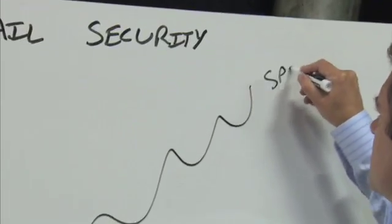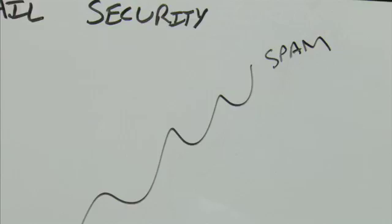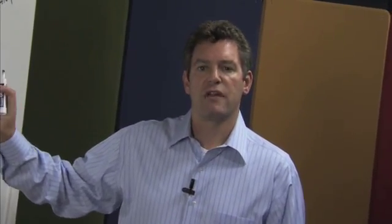When we trend spam volume over time, the trend line looks something like this. The primary driver behind this trend is the commercialization of spam. Spam is now purely motivated by profit, and this has given rise to increasingly sophisticated techniques that are being employed by the spammers.